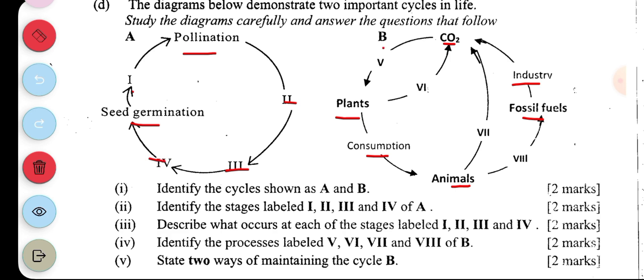Part three is asking us to identify the stages labeled one, two, three, and four in A. So one is maturation, two is fertilization, three is seed or fruit formation, then four is dispersal of fruits and seeds.